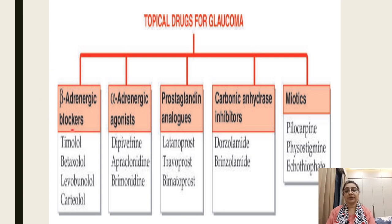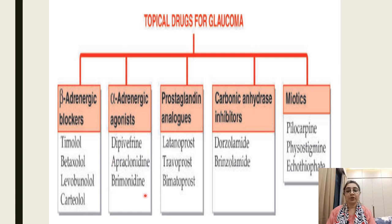The first group is beta blockers: timolol, betaxolol, levobunolol, and cartiolol. Alpha agonists include dipivefrin, apraclonidine, and brimonidine. The third group is prostaglandin analogs with drugs such as latanoprost, travoprost, and bimatoprost.